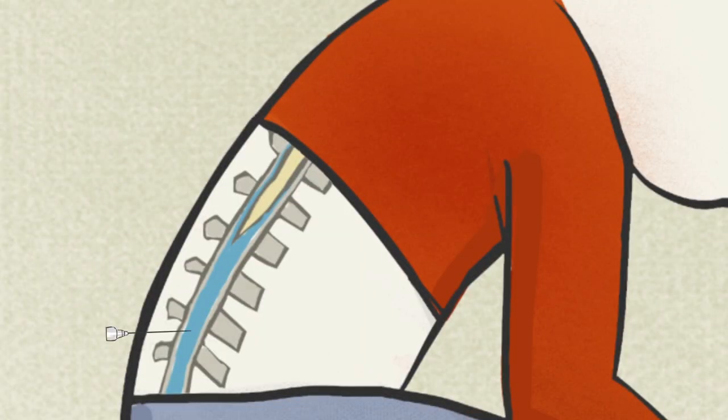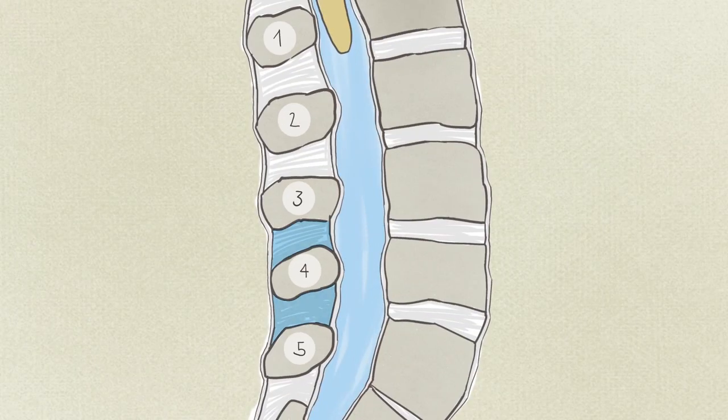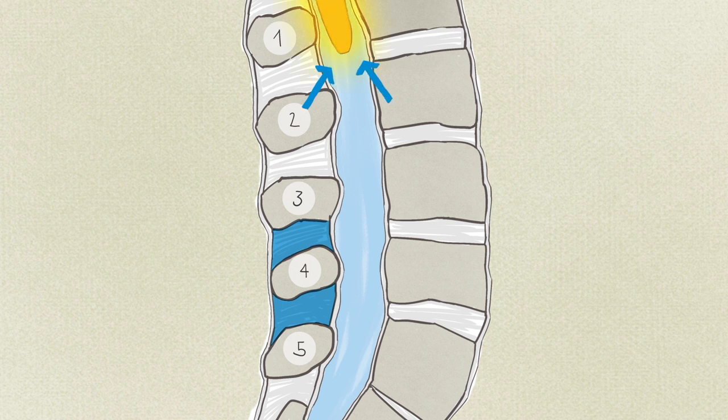But isn't that dangerous? Isn't that the spinal cord? Well, the puncture is made between the third and fifth lumbar vertebrae. By that point, the spinal cord has already ended and can no longer be injured by the needle.